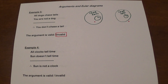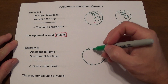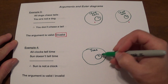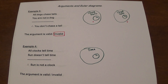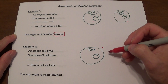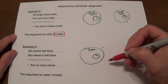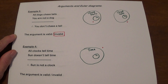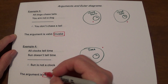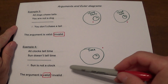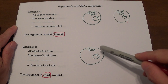Next: all clocks tell time, the Sun does not tell time, therefore the Sun is not a clock. All things that tell time form a large circle, and clocks lie entirely inside. The Sun does not tell time, so the Sun must lie outside that circle. In order for this argument to be invalid, you would have to show that there is a possibility for that dot to be located inside the circle — but it can't, because the Sun has to lie outside the circle of all things that tell time.